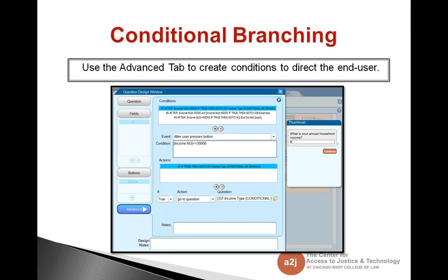Then the second type of branching is conditional branching. That's where you use the Advanced tab to create conditions to direct the end user. Conditional branching is taking information gathered in the question and evaluating it in a condition in the Advanced tab of A to J. So simple branching happens in the Buttons tab. Conditional branching happens in the Advanced tab where you have all the magic happening.